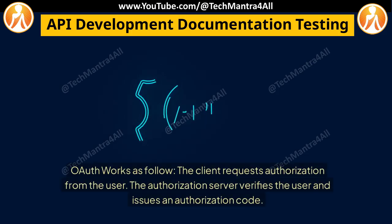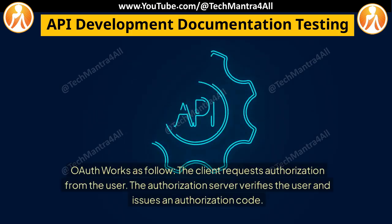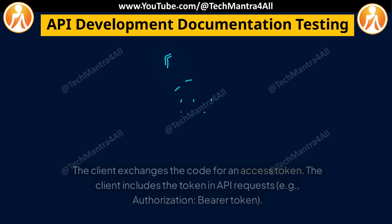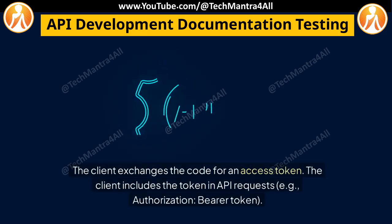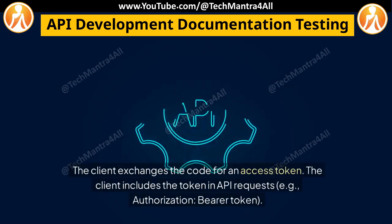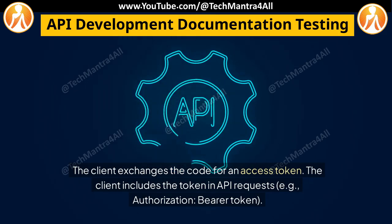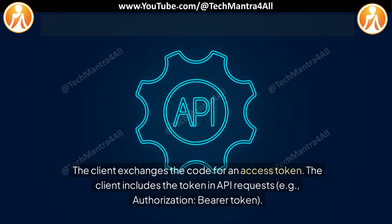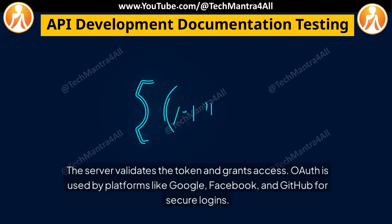OAuth works as follows. The client requests authorization from the user. The authorization server verifies the user and issues an authorization code. The client exchanges the code for an access token. The client includes the token in API requests — for example, Authorization: Bearer token. The server then validates the token and grants access.